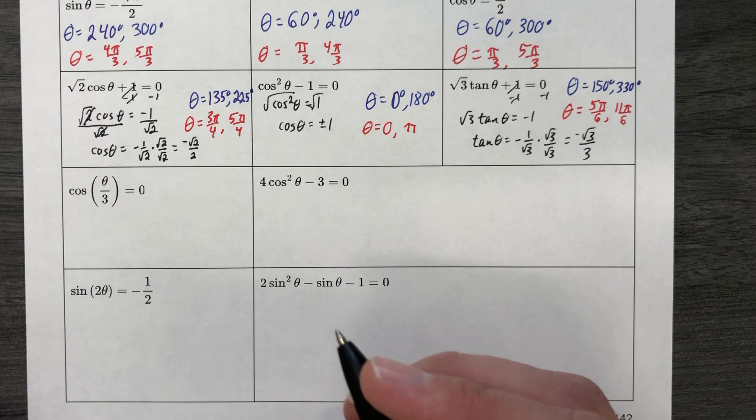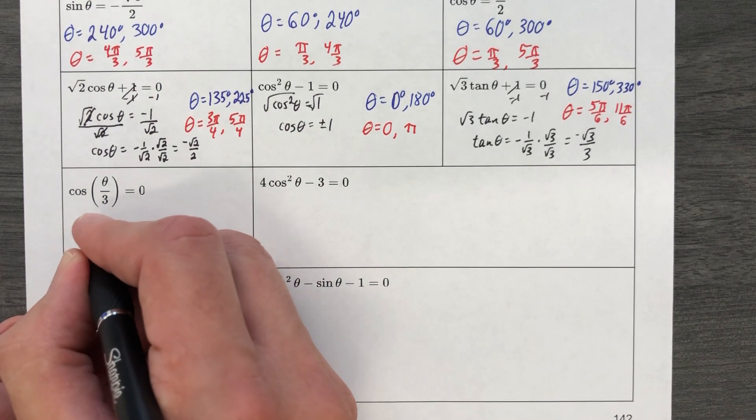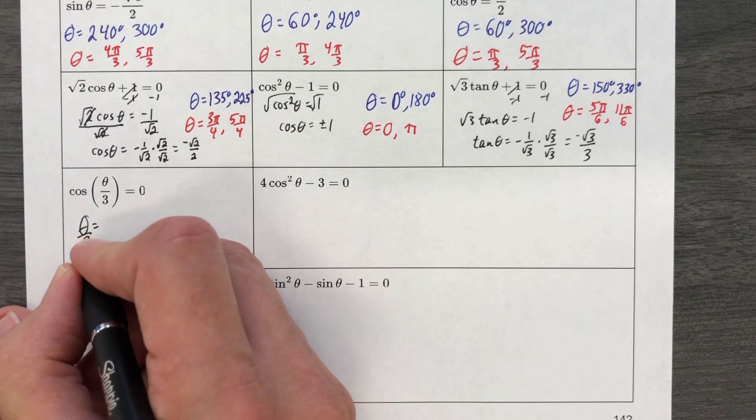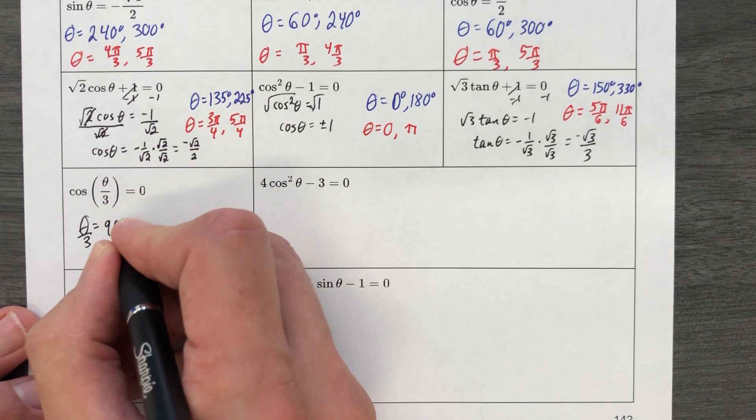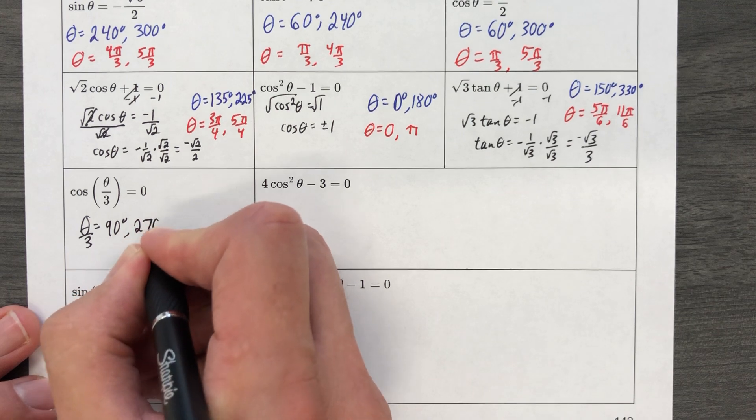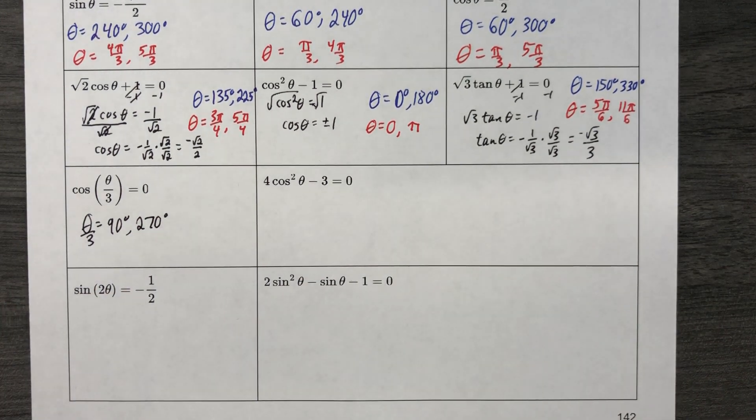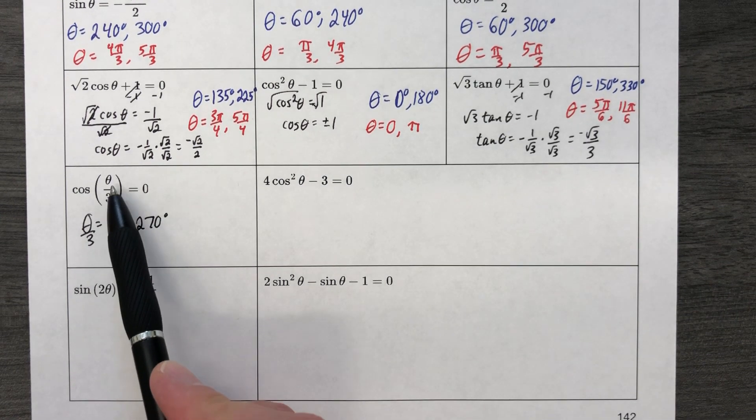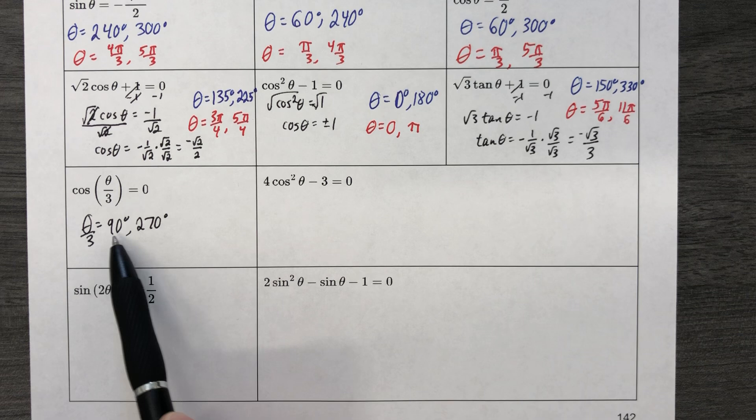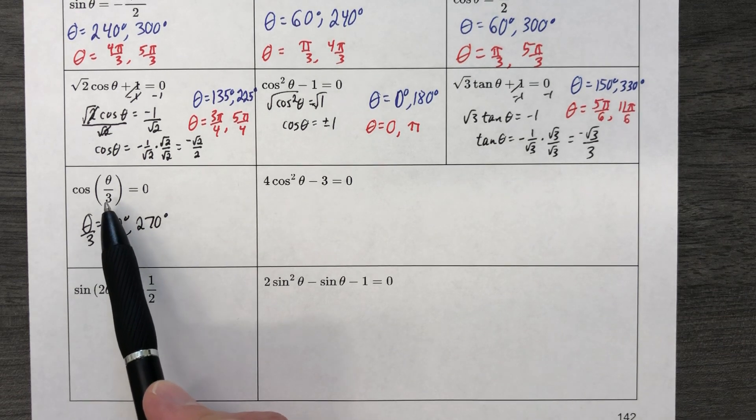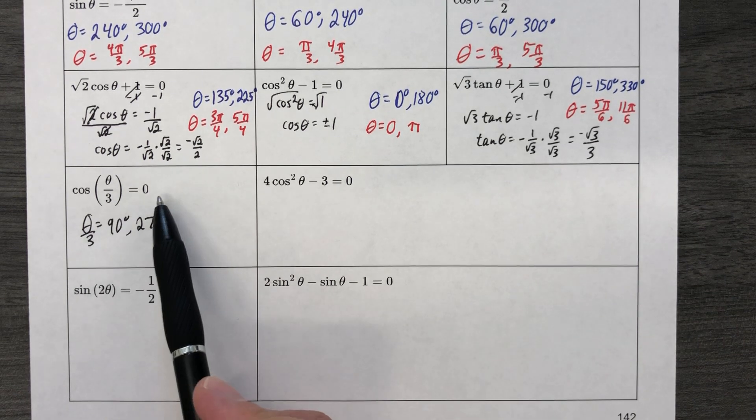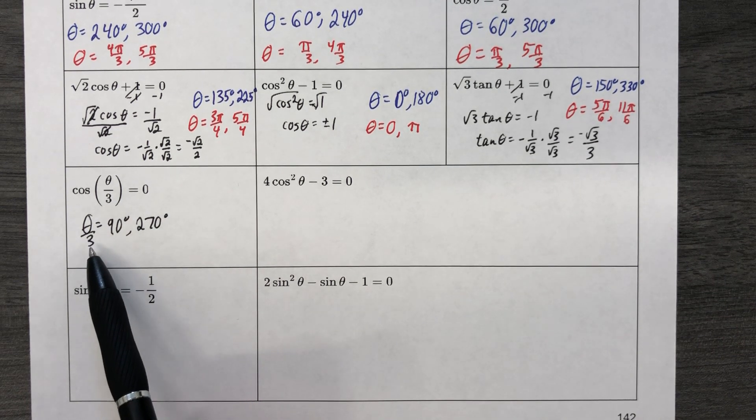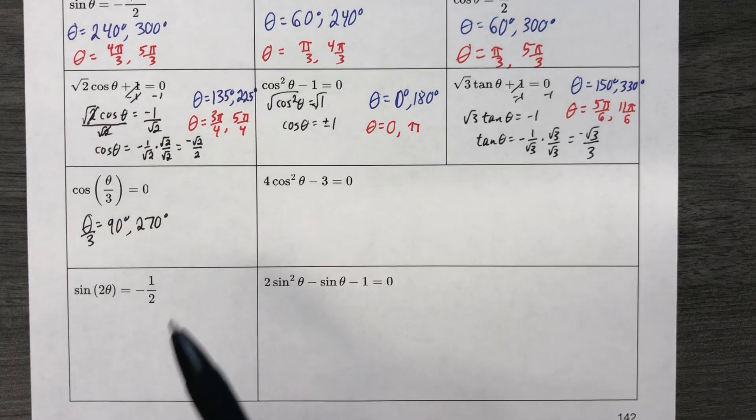So what I really have is theta over 3 equals 90 degrees and 270 degrees. So if I'm looking for where cosine is equal to 0, I found it, but I actually ended up with a couple possible answers, and it's not where the angle equals 0, it's where the angle divided by 3 equals 0. So now we have to solve these.